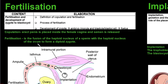Copulation is when the erect penis is placed inside the female vagina and semen is released. Remember, semen is the sperm plus all of those fluids from the accessory glands. Fertilization is the fusion of the haploid nucleus of the sperm with the haploid nucleus of the ovum to form a diploid zygote — 23 chromosomes from the sperm and 23 from the egg, forming a zygote with 46 chromosomes, or 23 pairs, from maternal and paternal sides.